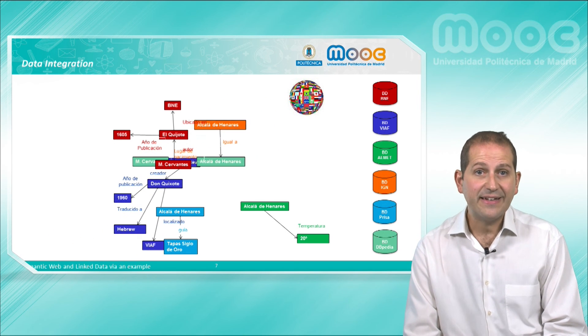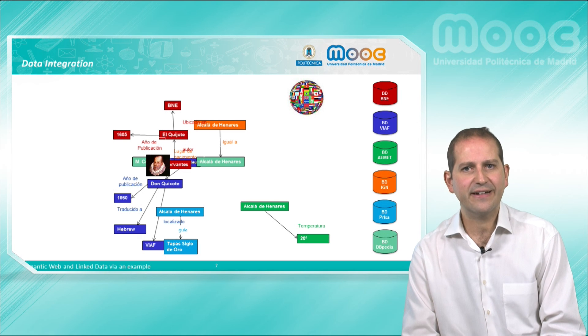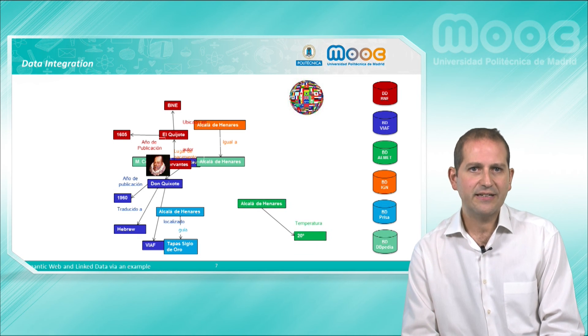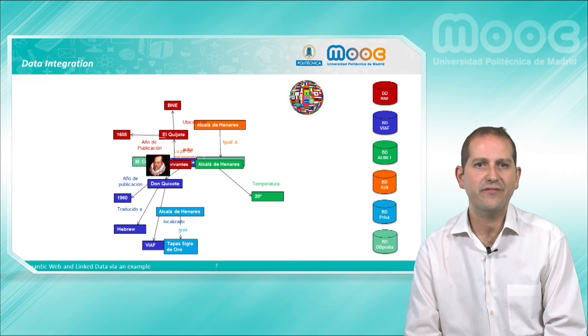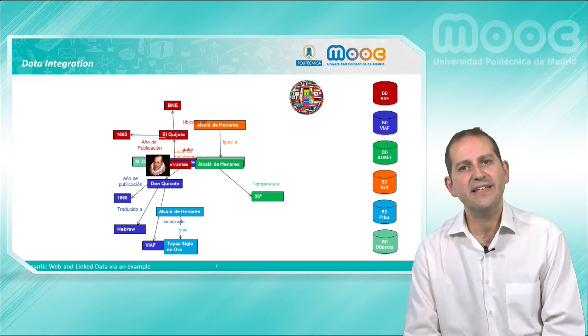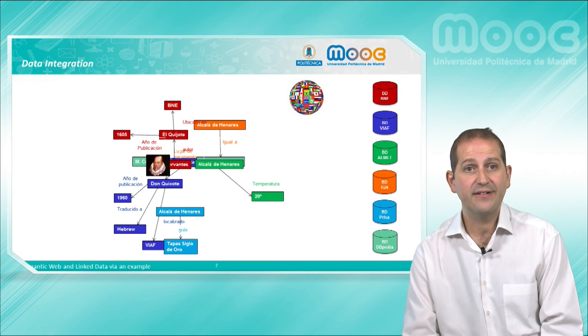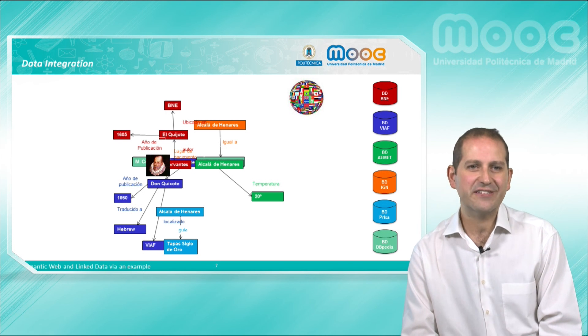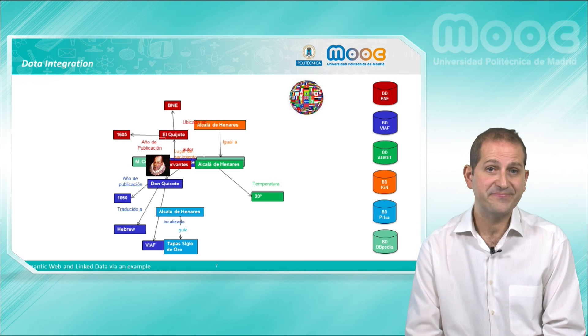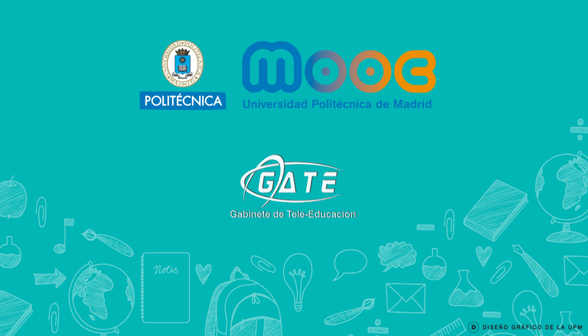In the following modules, we will start by understanding the foundations for representing and querying such data using RDF and SPARQL, and the processes needed for transforming data into RDF, linking it to other data sources, publishing it under the Linked Data Principles, and making sure that the right vocabularies are used or created and published.